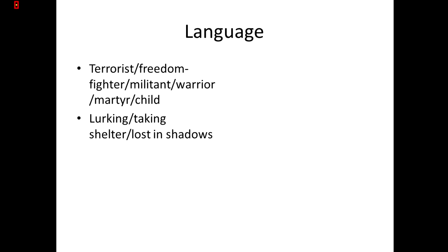In terms of language, this is a poem that strongly uses language — it's called 'The Right Word' and the voice is desperate to find the right words to use. Language is particularly significant in this poem. It's simple, direct — you might even call it blunt. That first stanza, 'outside the door, lurking in the shadows, is a terrorist,' is quite blunt, direct, and straightforward.